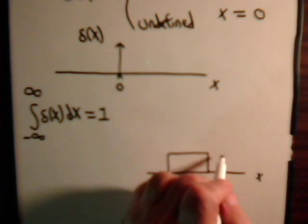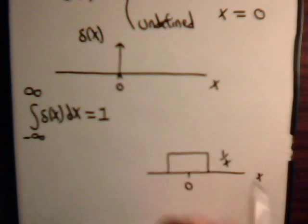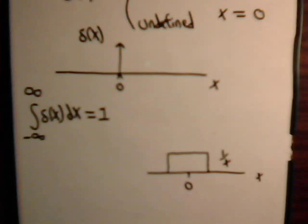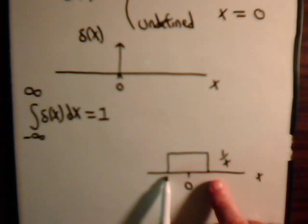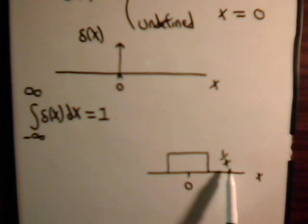The height of it is 1 over x. So it's going to have an area of unity, x times 1 over x. Now, imagine that the base keeps getting narrower and narrower, then it's going to continue to get higher and higher.